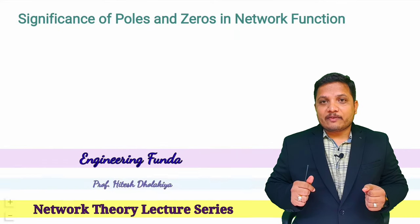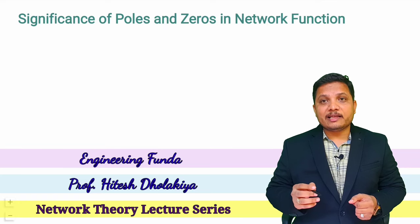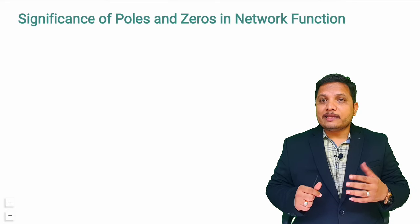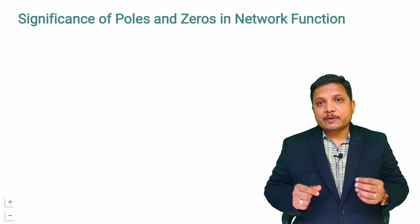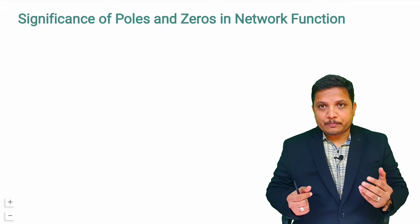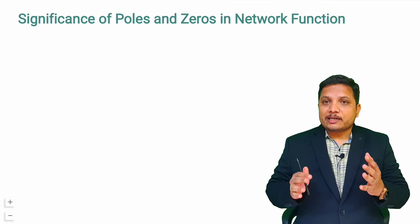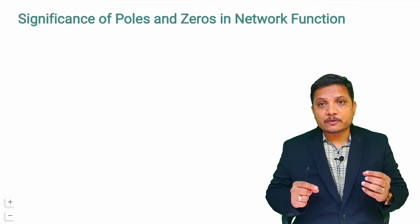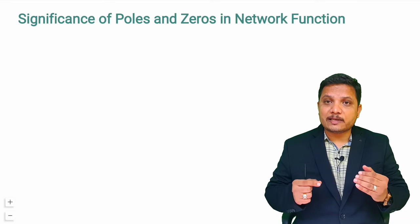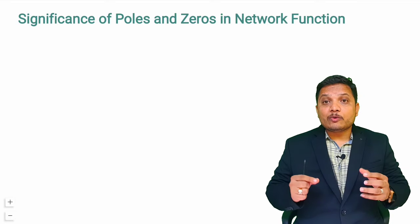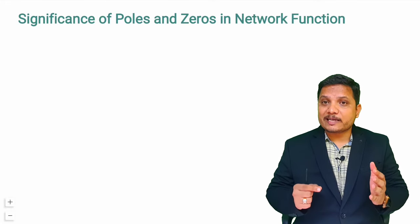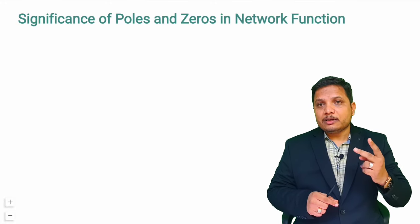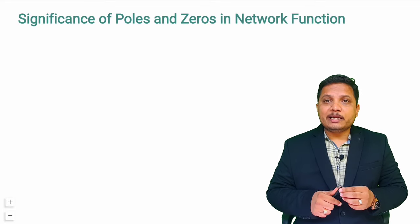Welcome to Engineering Funda family. This video is part of the network theory lecture series. In this video I'll explain the significance of poles and zeros in network functions. First I'll explain what a transfer function is, then how to identify the number of poles and zeros, their locations, how to identify stability using poles and zeros, and finally I'll solve two problems based on poles and zeros for identifying system stability.